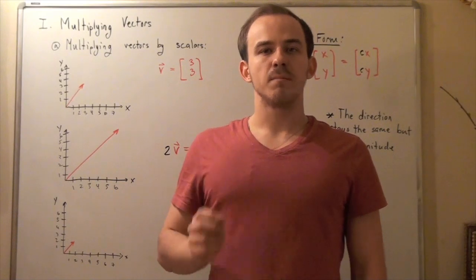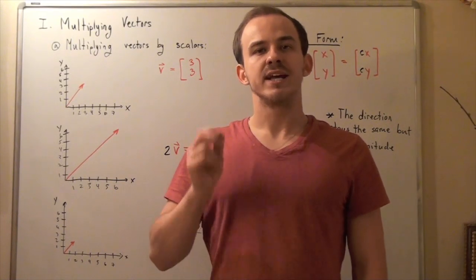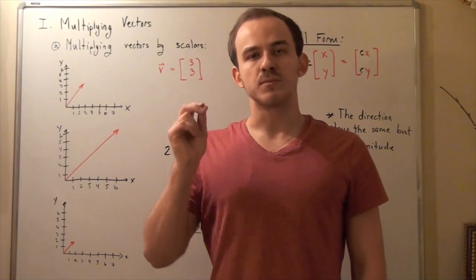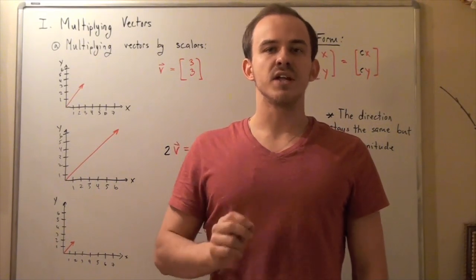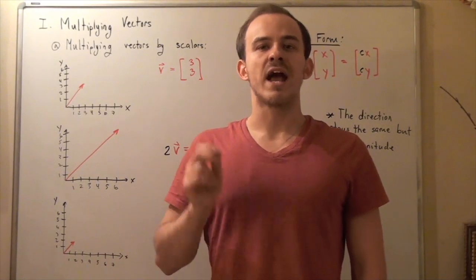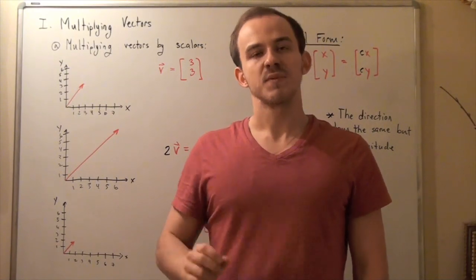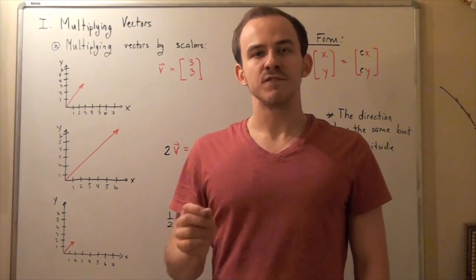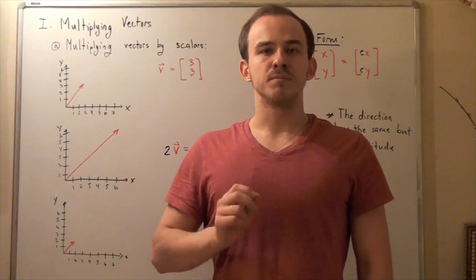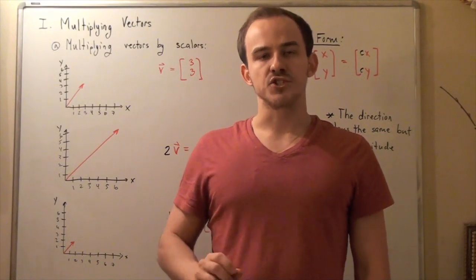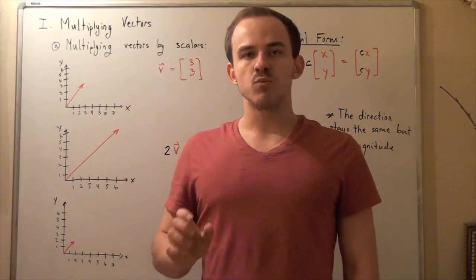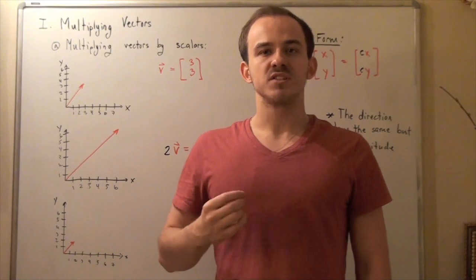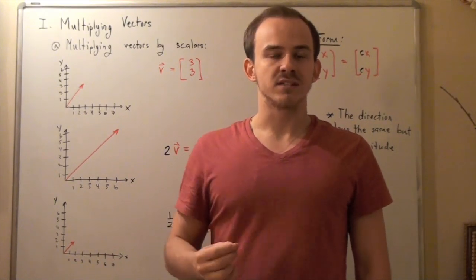We already spoke about subtracting and adding vectors, and we saw that subtracting and adding vectors is different than subtracting or adding scalars. Likewise, multiplying vectors is different than multiplying scalars. Now, there are three different ways we can multiply a vector.